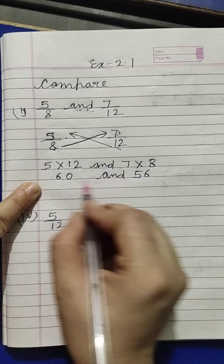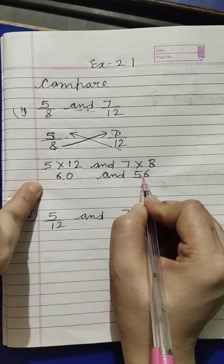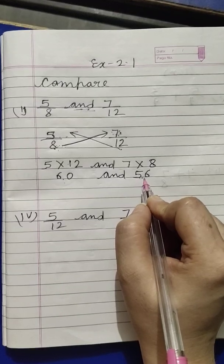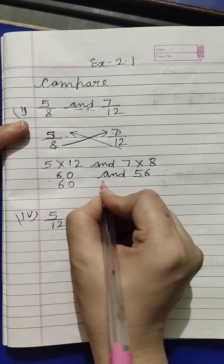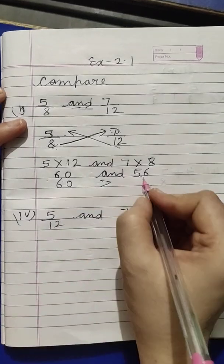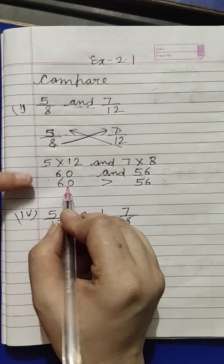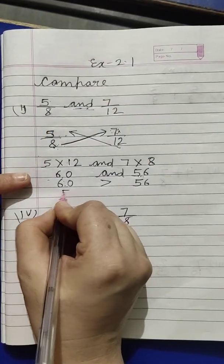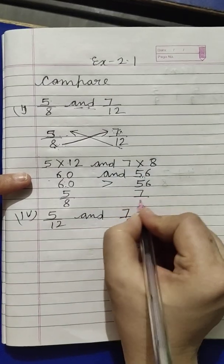Now tell me this one. How will we write the sign? 60 is greater or 56 is greater? Can you tell us, what will it be? How much will be the greater? 60 is it? We will write the sign. Where is greater sign? 60 is greater than 56. That is 5 upon 8 and who is this? 7 upon 12. So which is bigger? This number.